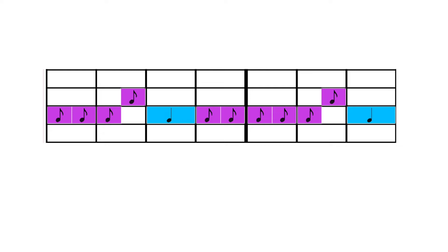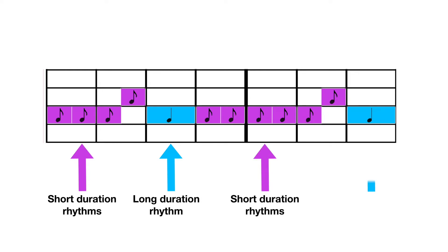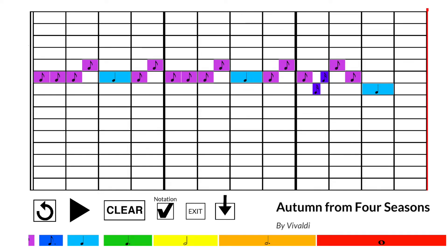I notice that we have some shorter, faster moving rhythms here that are followed by a longer duration rhythm. Then again we have shorter duration rhythms with these purple eighth notes that come to a rest on a longer duration blue quarter note here. This pattern continues through the opening section of the music. Listen as Vivaldi uses a series of faster moving notes that are always followed by a longer note.